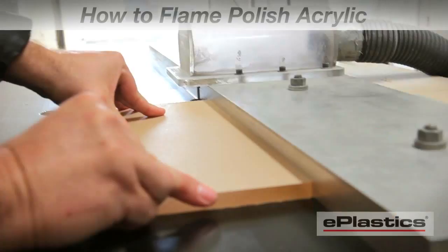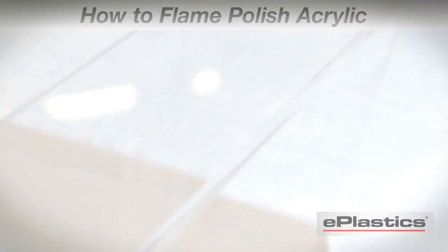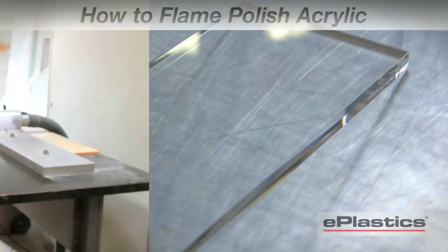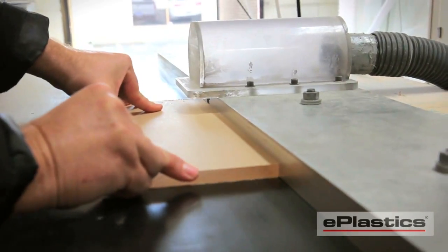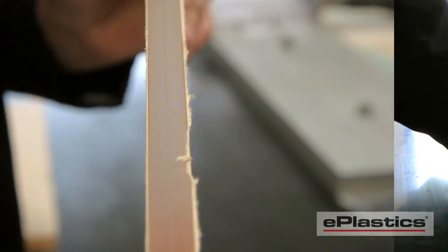Welcome to ePlastics. Today we're going to show you how to flame polish acrylic. While a sanded or saw cut edge can be polished, we at ePlastics always prepare our edges with a fine milled edge before polishing.